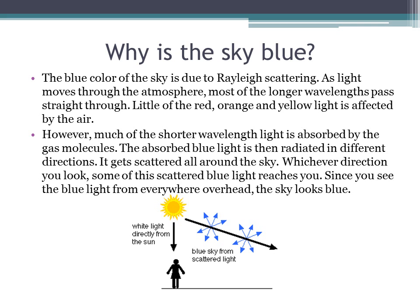However, much of the shorter wavelength light is absorbed by gas molecules. The absorbed blue light is then radiated in different directions. It gets scattered all around the sky. Whichever direction you look, some of this scattered blue light reaches you. Since you see the blue light from everywhere overhead, the sky looks blue.